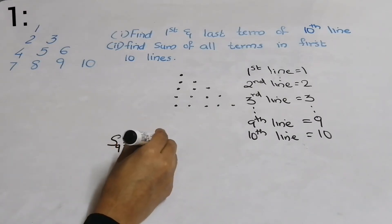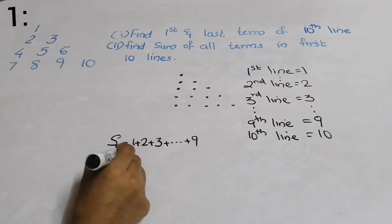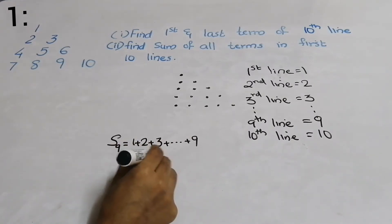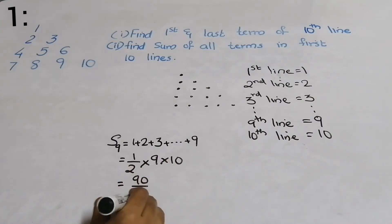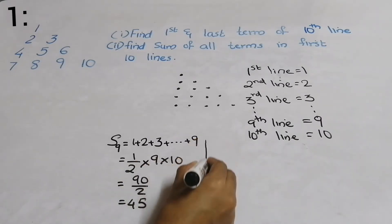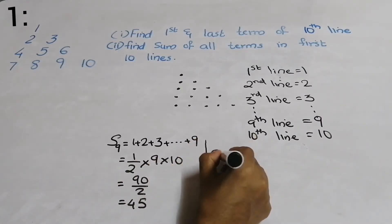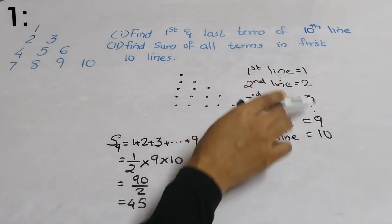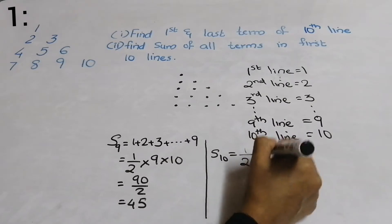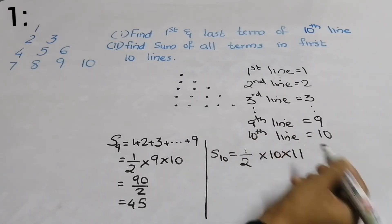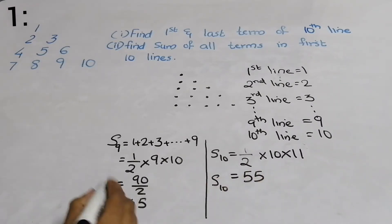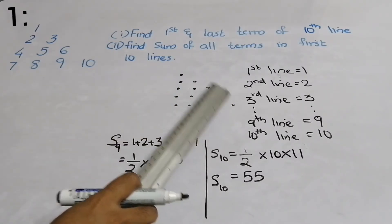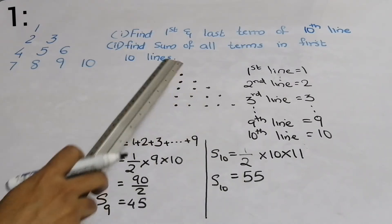S(9) = 1 + 2 + 3 + ... + 9. For natural numbers starting from 1, the formula is half into last number into next number, giving us 9 × 10 / 2 = 45. Now coming to the tenth line, similarly S(10) = 1 + 2 + 3 + ... + 10, which gives us half into 10 into 11 = 55. So there are 45 terms from the first line to the ninth line, and 55 terms from the first line to the tenth line.